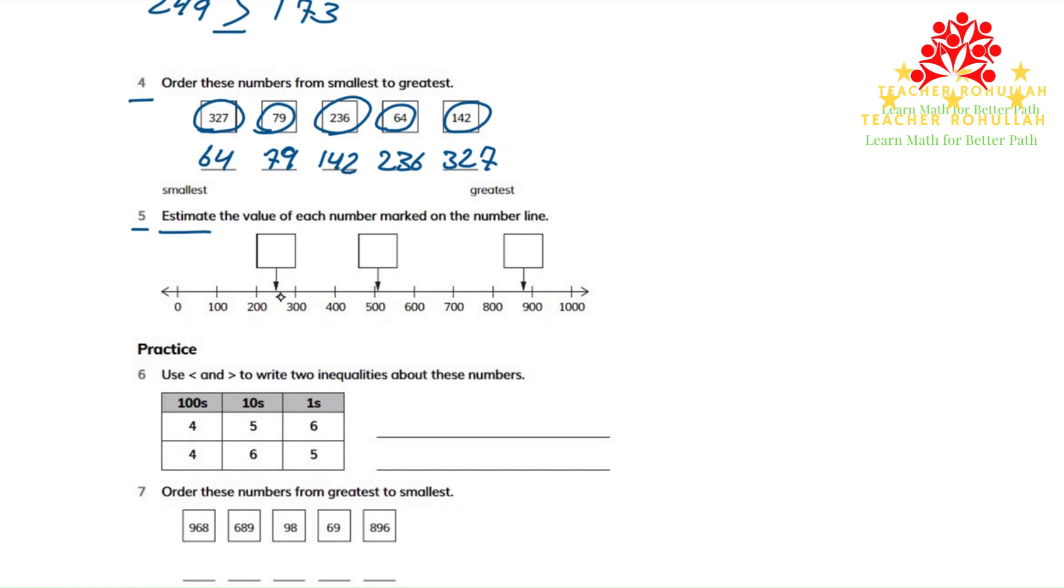In the first box, we can see that it is halfway between 200 and 300. So we estimate that it is about 250.